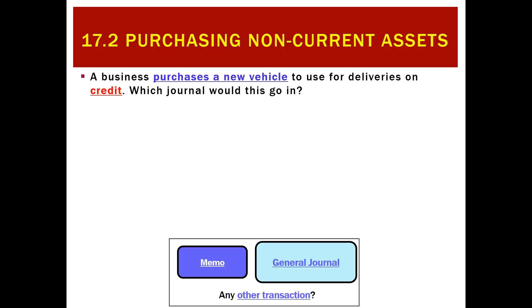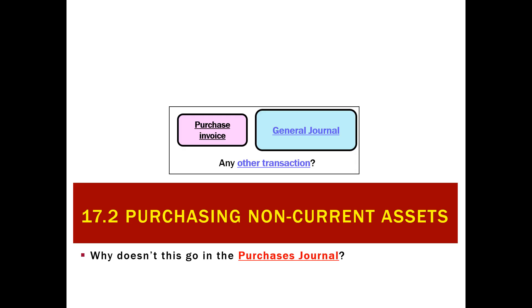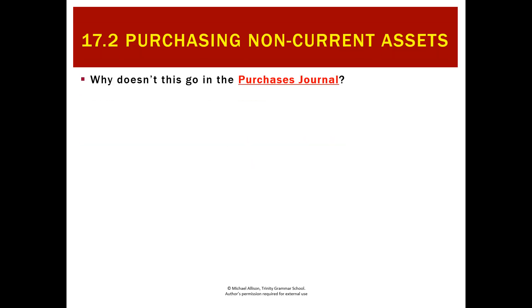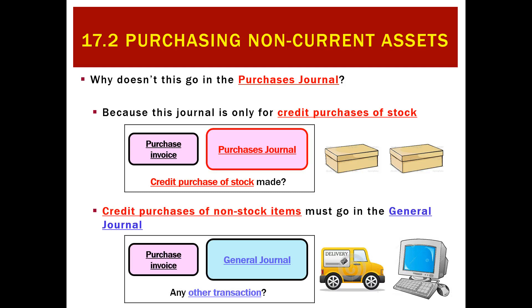One slight difference: normally we use a memo to record transactions in the general journal, but that's not true in this case. It will still be a purchase invoice because we are buying on credit — it's just for a non-current asset instead of stock. The purchases journal is for credit purchases of stock only, so buying a non-stock item on credit, such as a car, computer, or furniture, goes in the general journal.